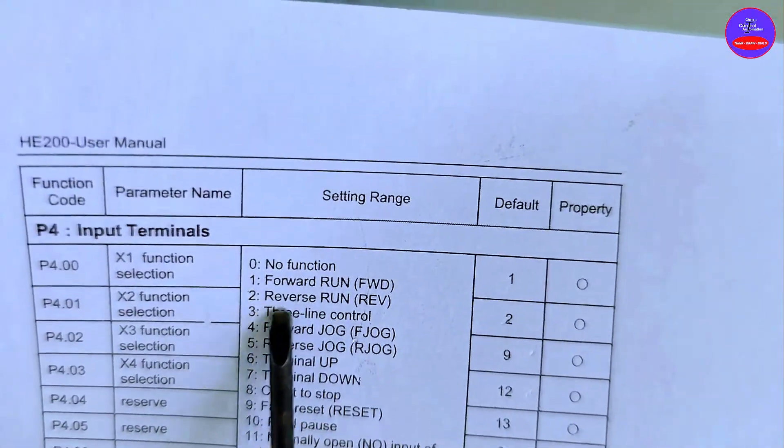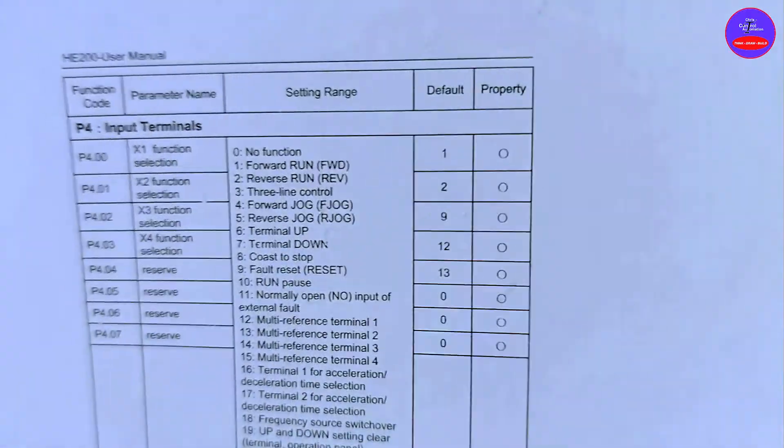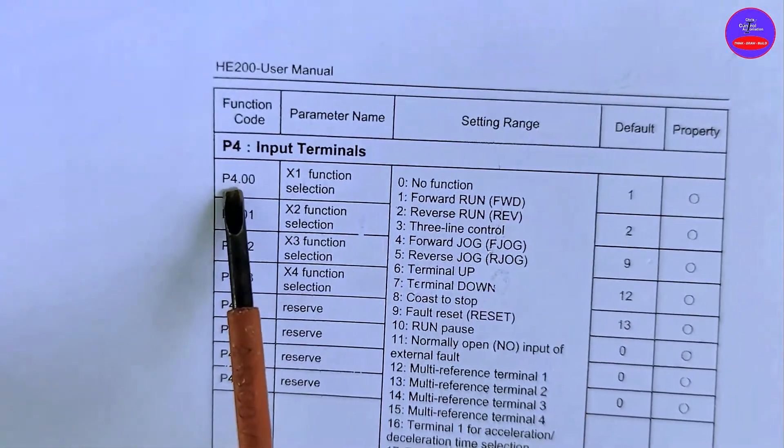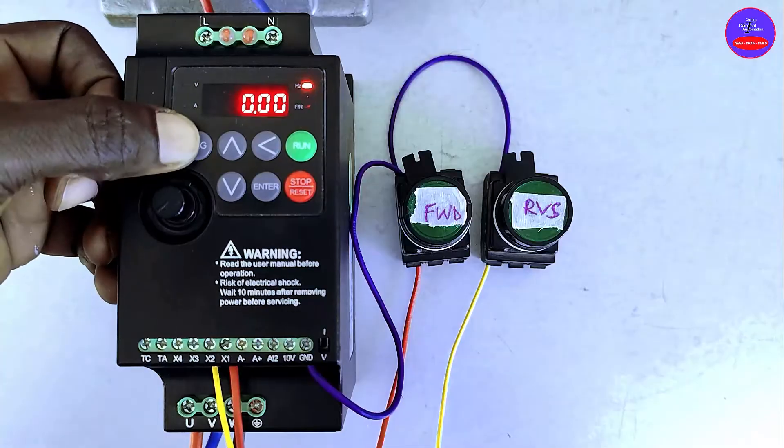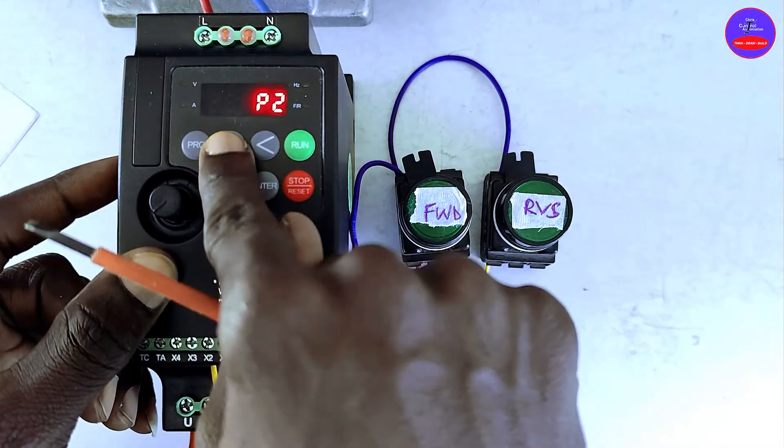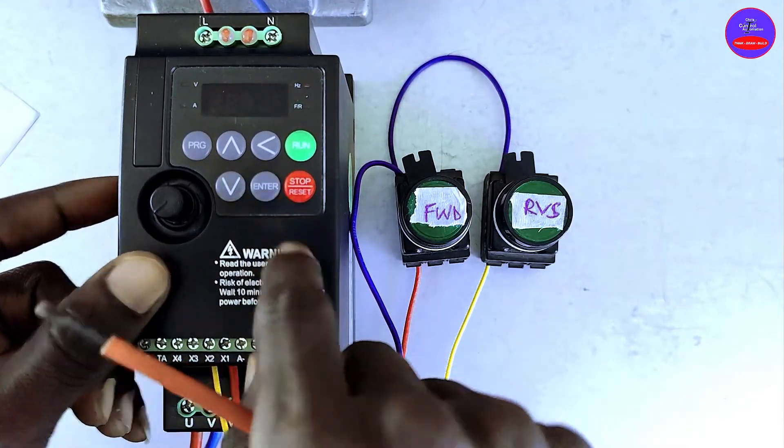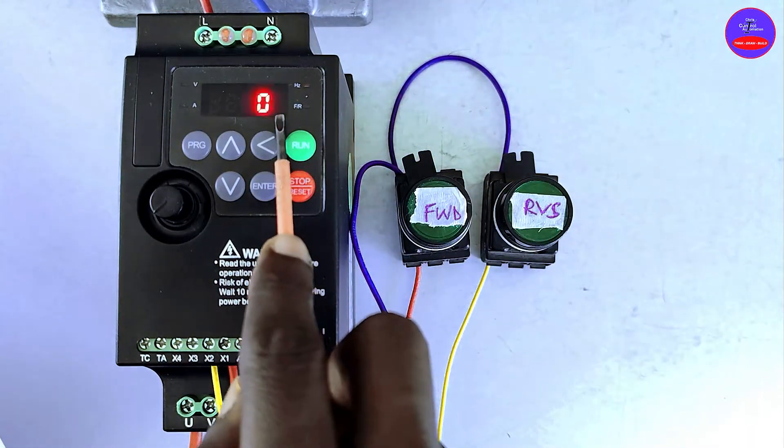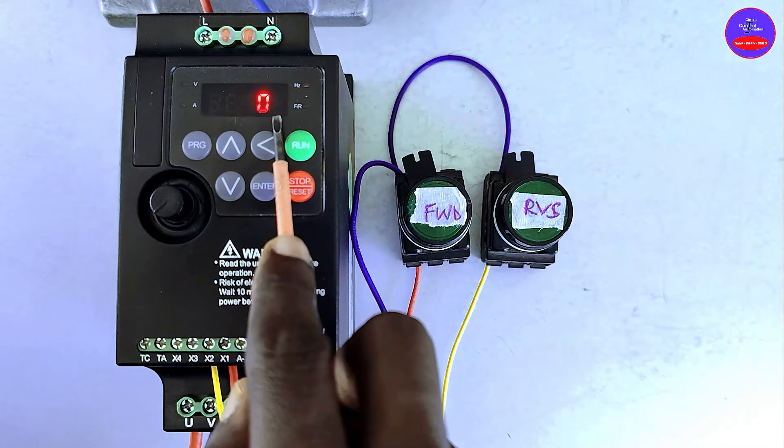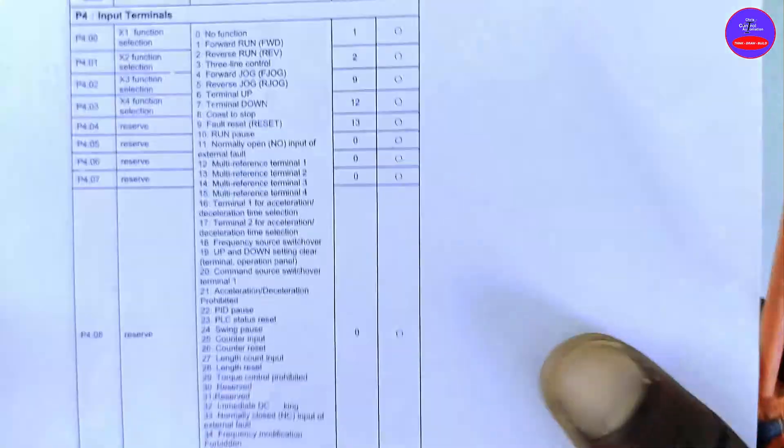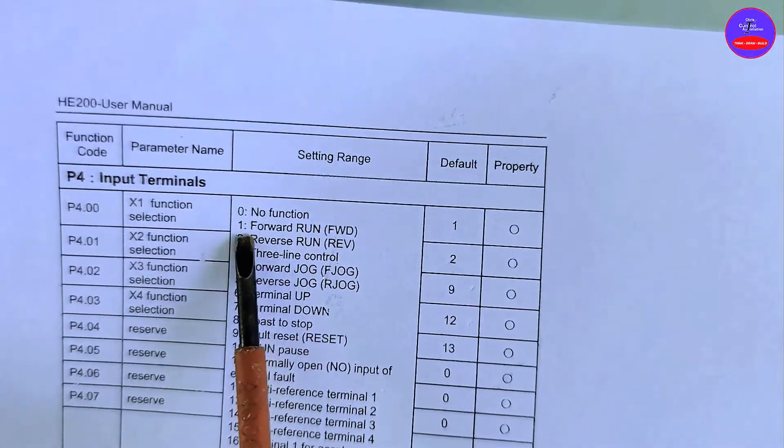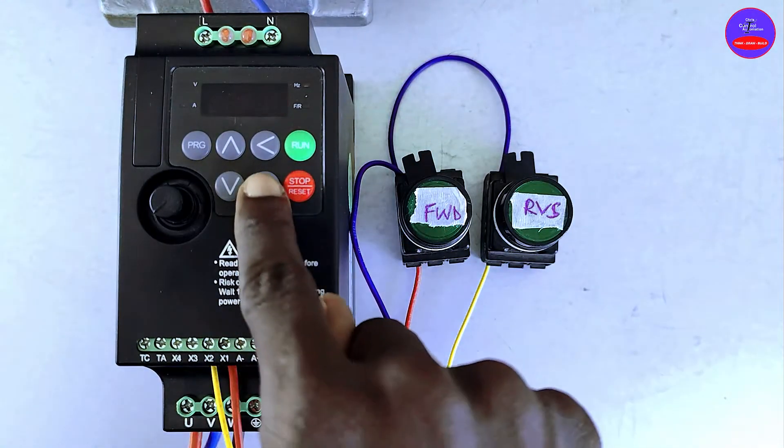We go to P4.00. Program. Enter. We press enter. Now zero is blinking meaning it is on zero. We are going to select one, forward run. Enter.